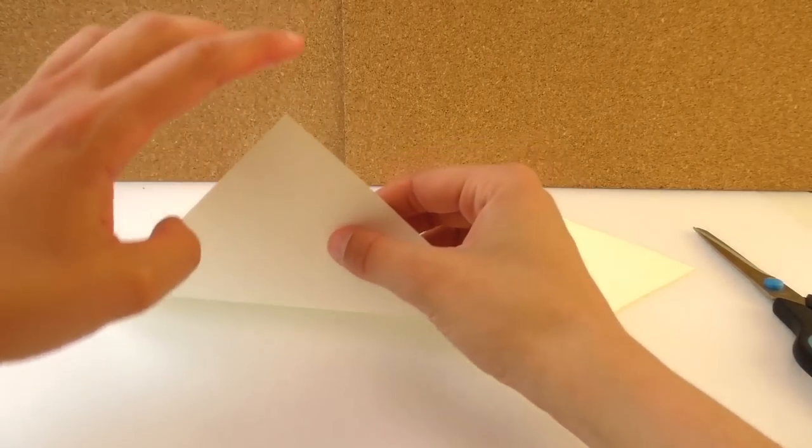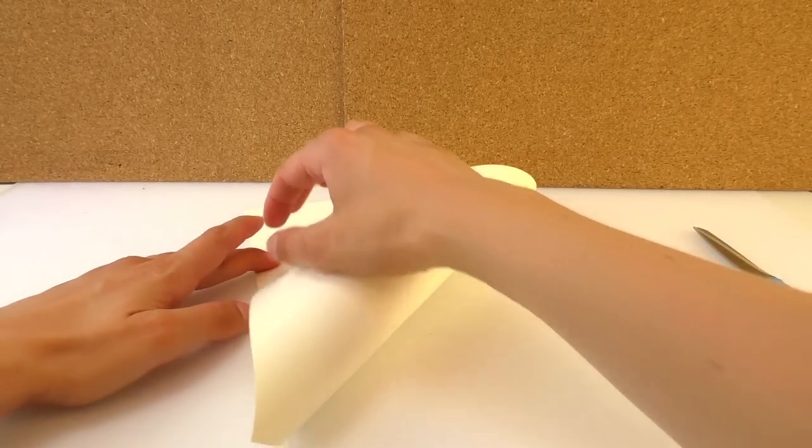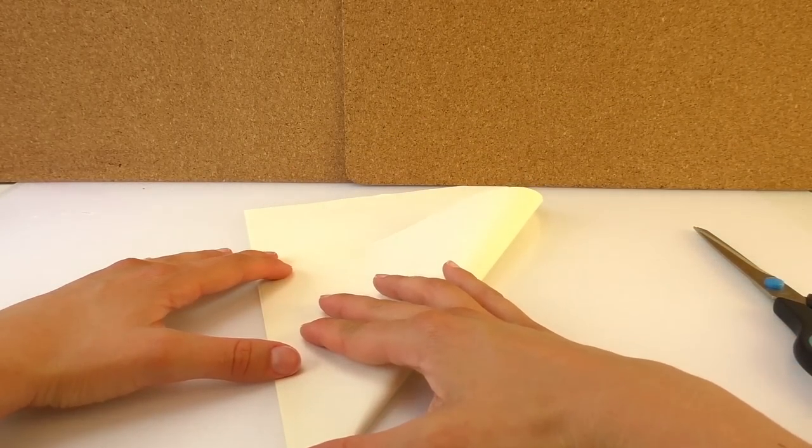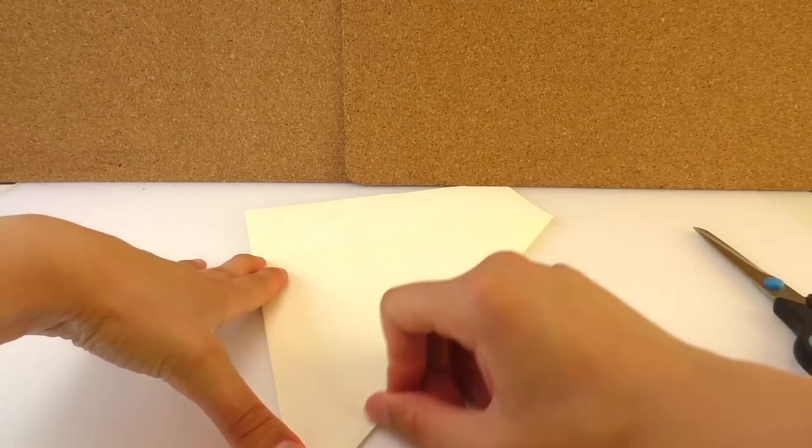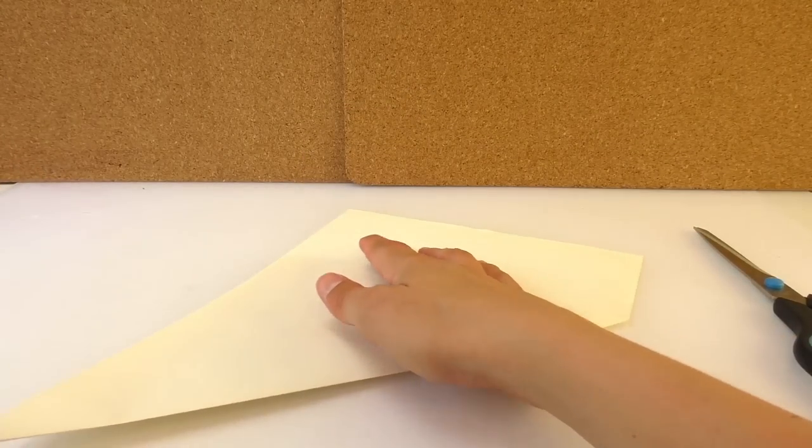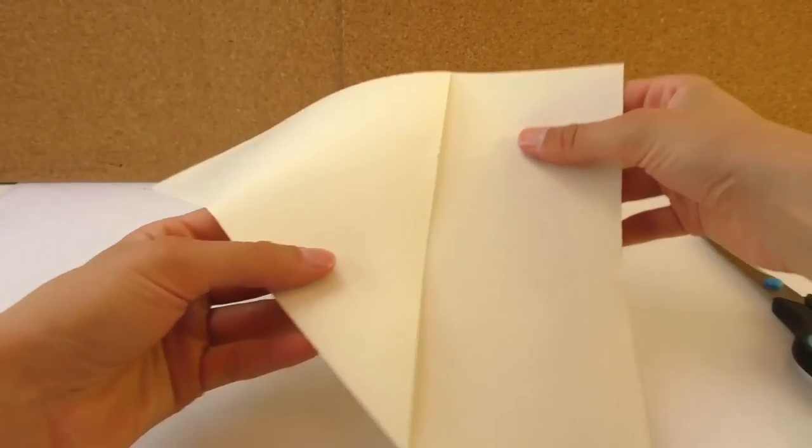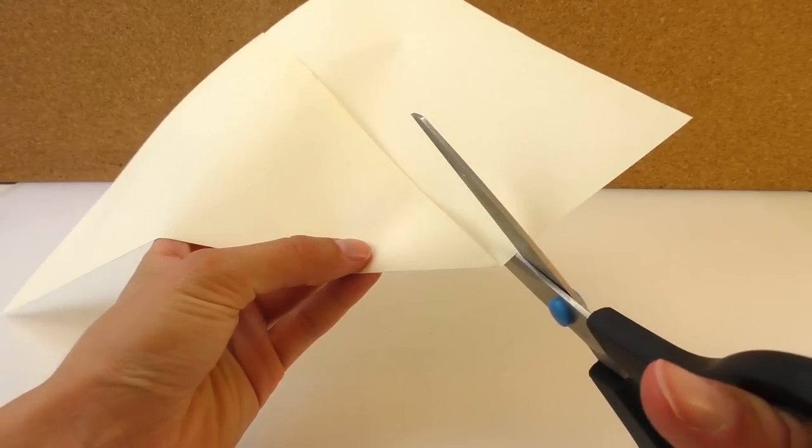So let's get started. First we're going to grab our blank piece of paper and we're going to fold the right edge of the paper all the way to the left. Like this and we're going to fold it really well. So we're going to fold it in half like this, making a triangle. And this remaining part we're going to cut it.